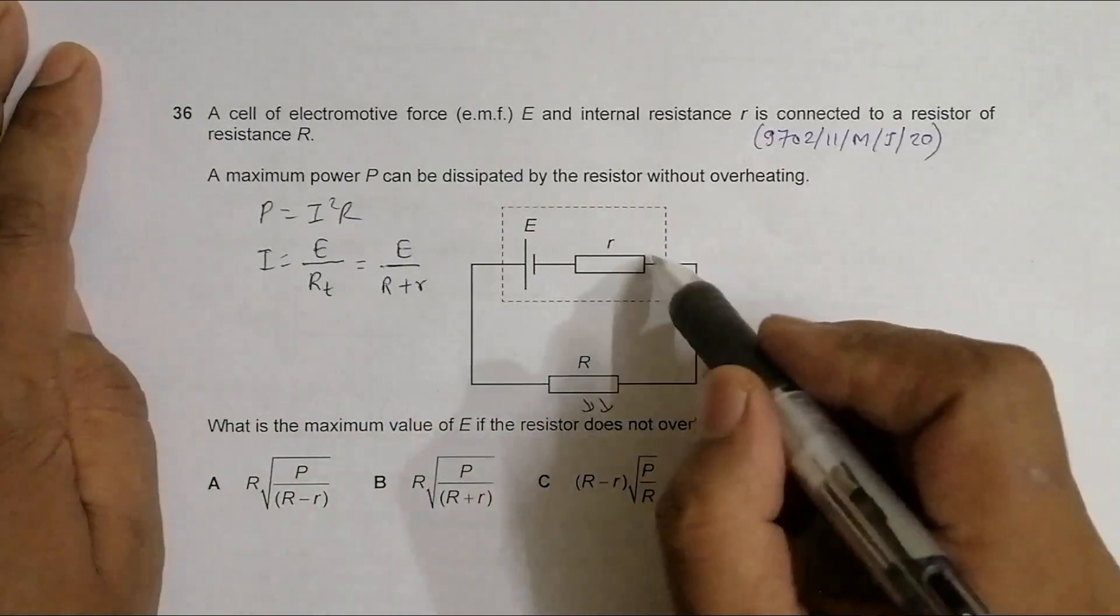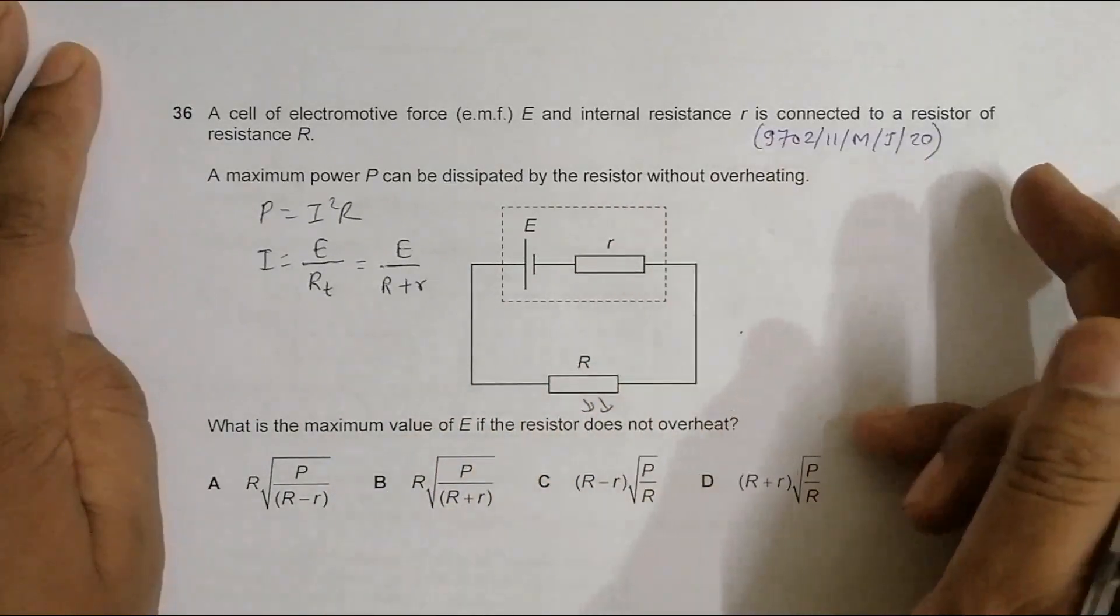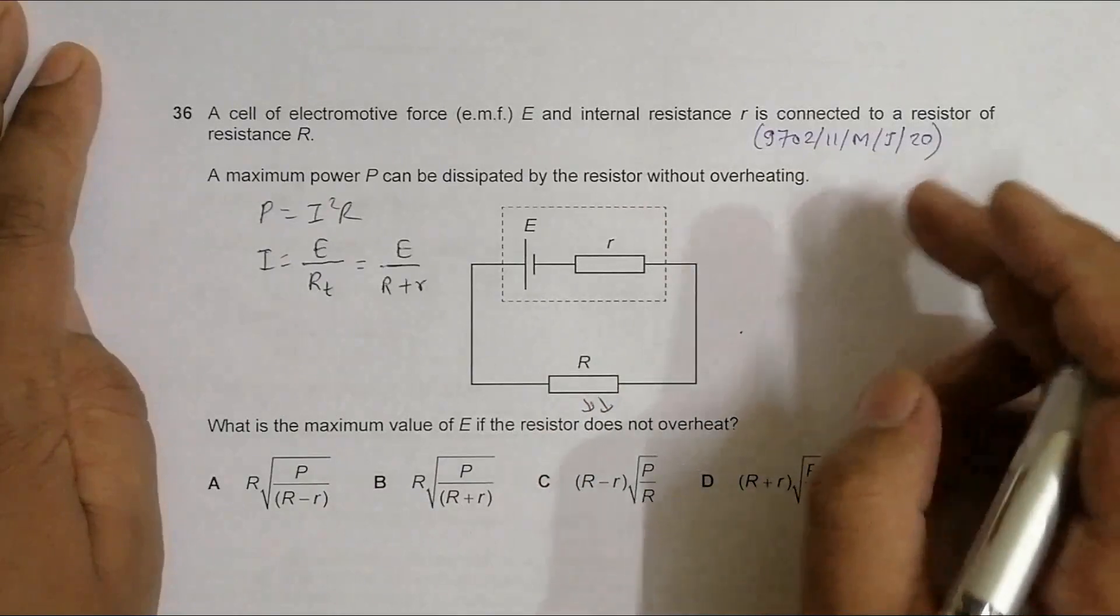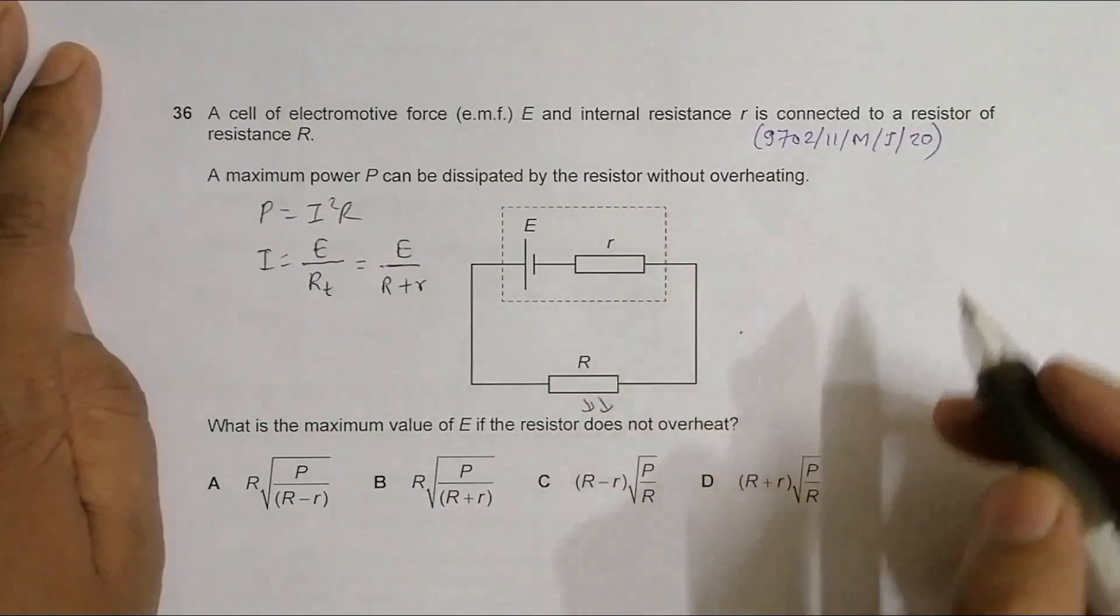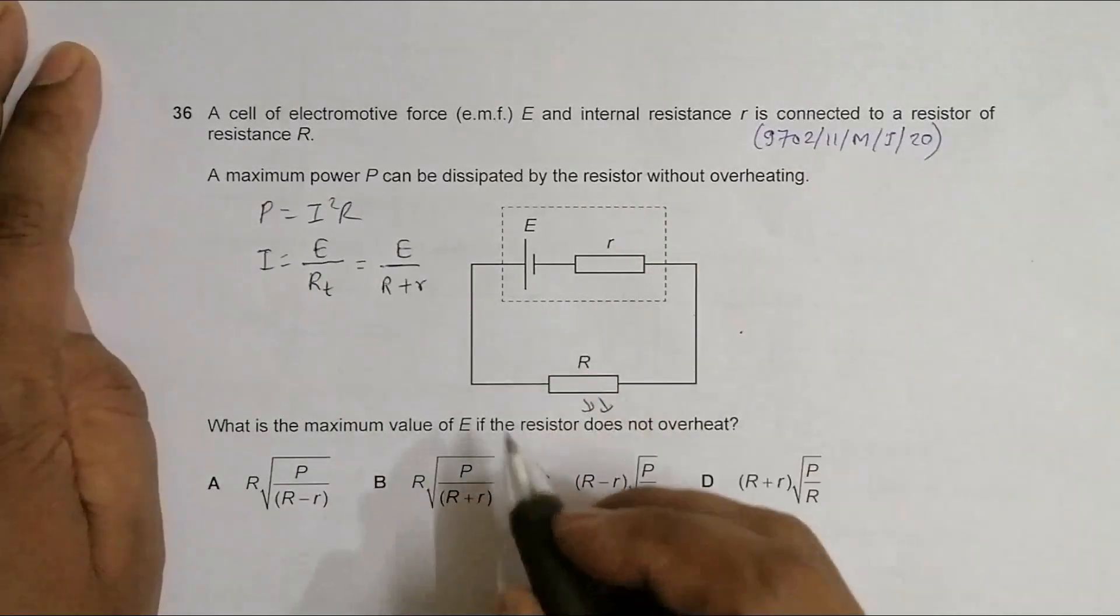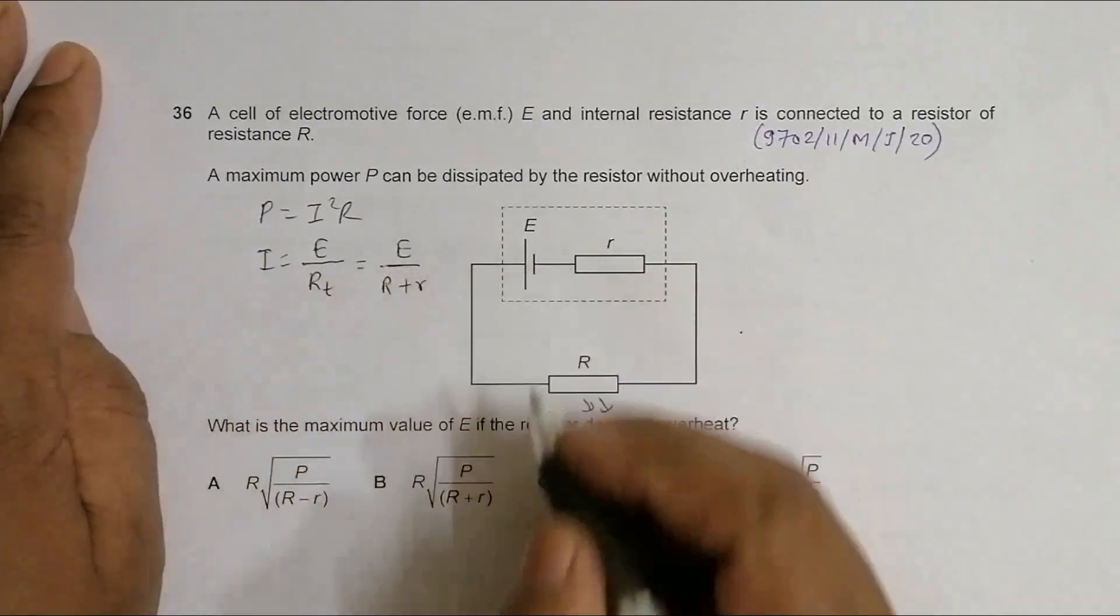The charges that enter here will definitely come out and enter here at some point of time, so they're in the same chain. Charge flowing through one is sure to flow to the other, so it's a series. People often get confused, that's why I was stressing this thing. So I is equal to E divided by R plus r.